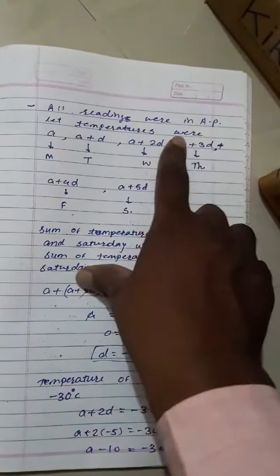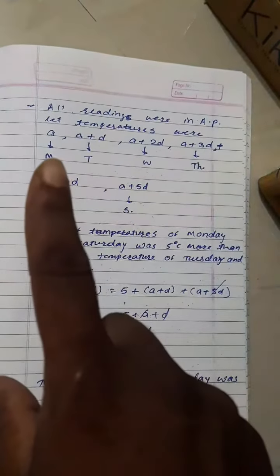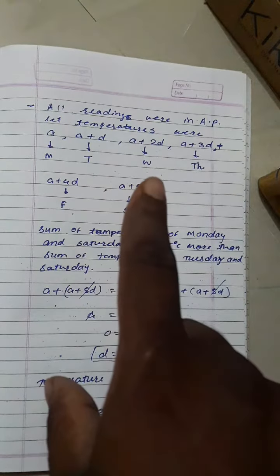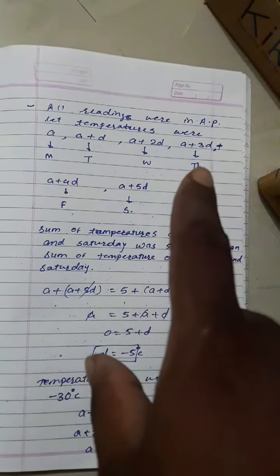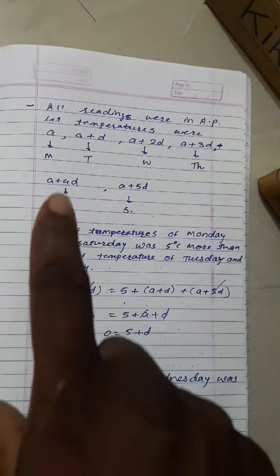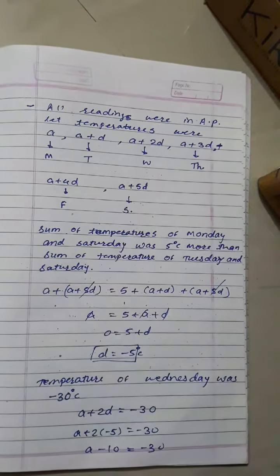All varying in AP. So let the temperature be: on Monday, A; Tuesday, A plus D; Wednesday, A plus 2D; Thursday, A plus 3D; Friday, A plus 4D; Saturday, A plus 5D.